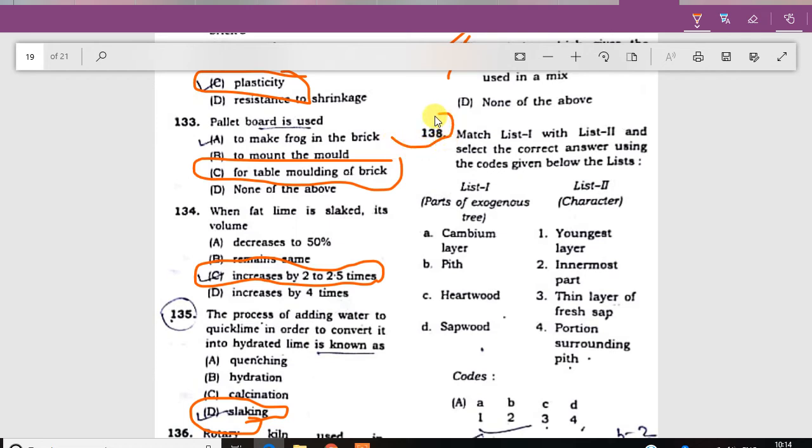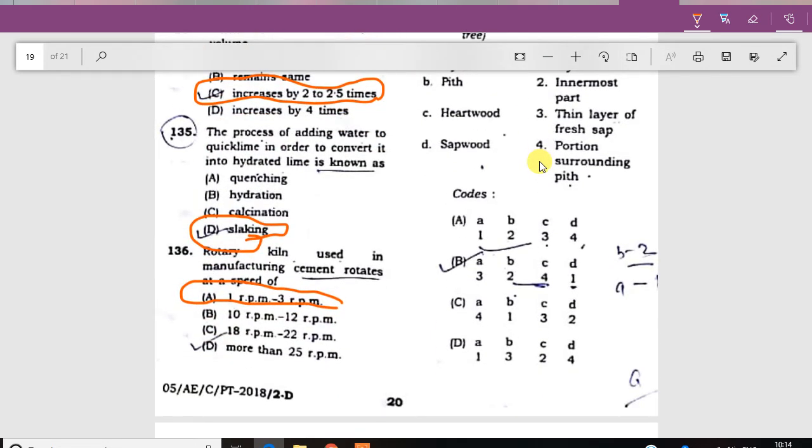Question 180: The cambium layer is the thin layer of fresh sap. The pitch is the inner part. The heartwood is the portion surrounding the pitch. The sap is the youngest layer. The answer is B.